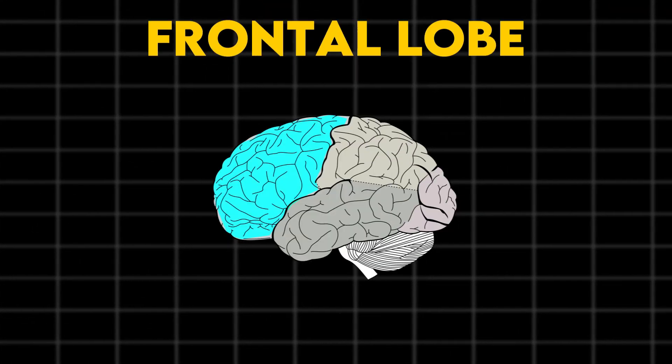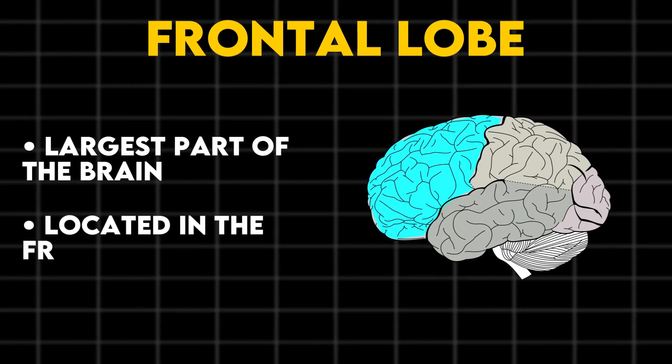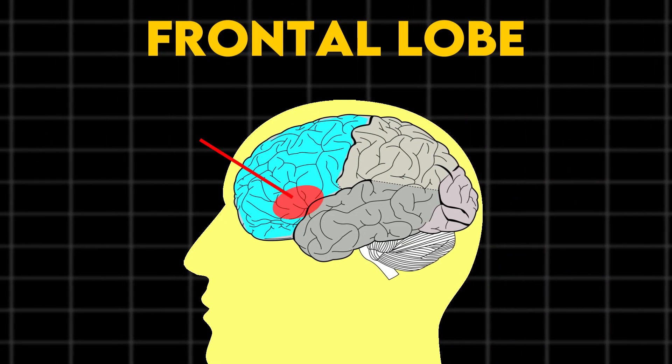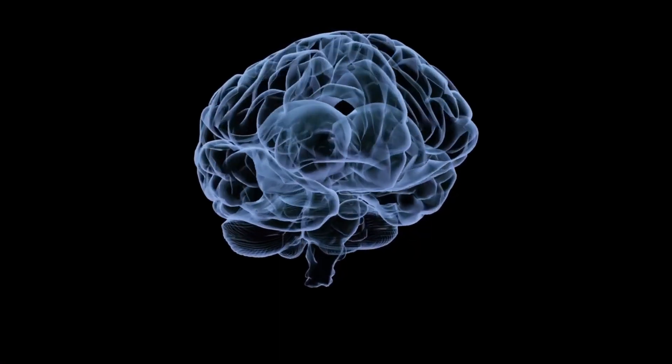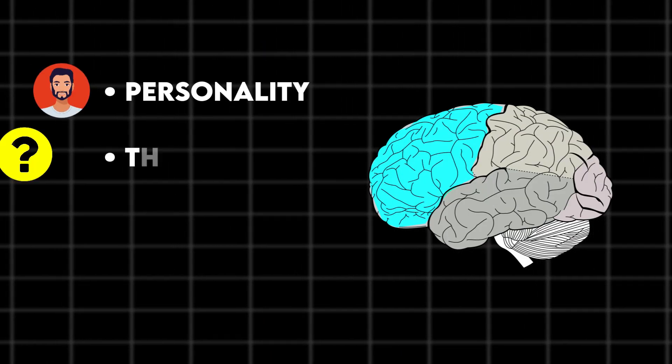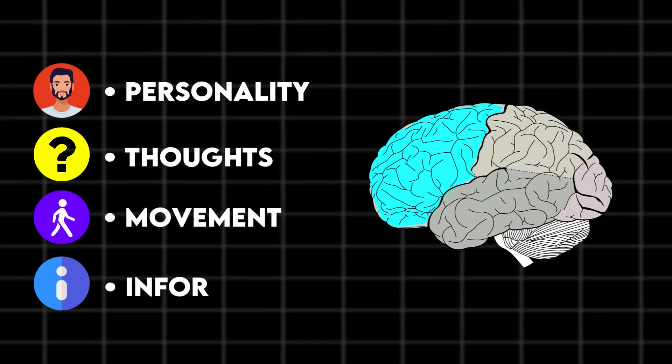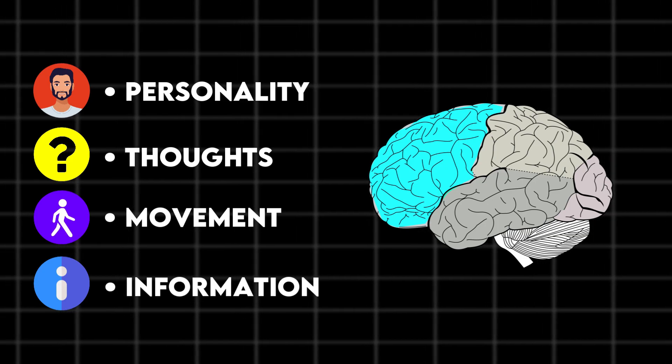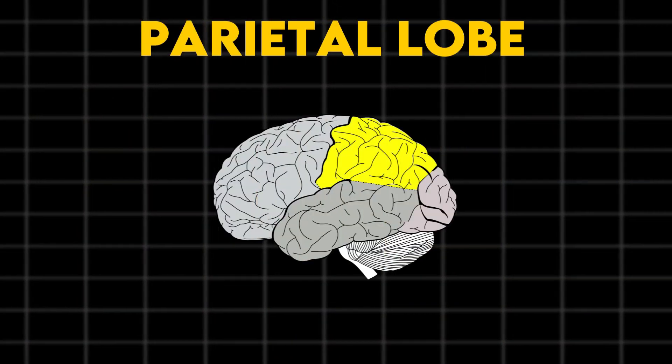The frontal lobe is the largest part of the brain, and it is located in the front of the head. Broca's area, which pertains to speech ability, is also located here. It has control over a wide range of abilities, including personality traits, how you think, move, and recall information. It also plays an important role in your social skills, as it helps in developing an understanding and control of how you speak, act, and interact with others.